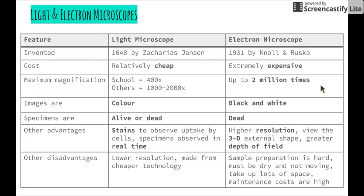Specimens can also be observed in real time — we could put a live organism underneath the microscope and watch what it is doing. Some disadvantages, however: light microscopes use quite a lower resolution than the electron microscope, so images are not as sharp and in focus. And because they're made from cheaper technology, they don't necessarily last as long.